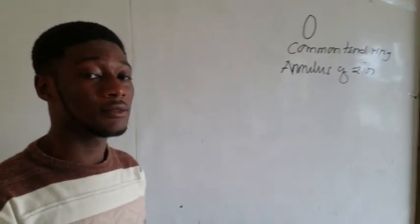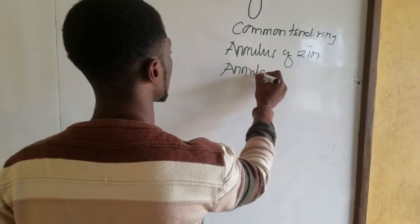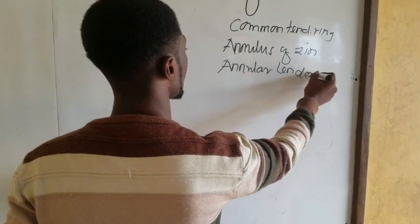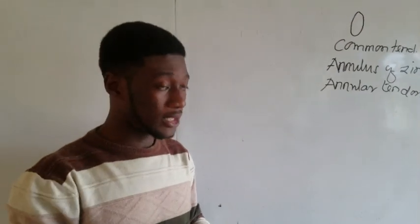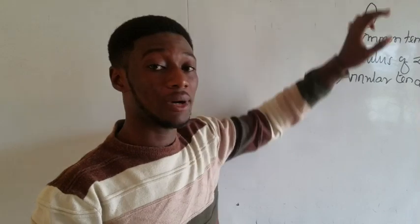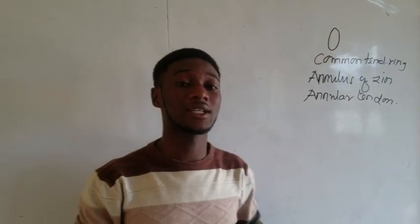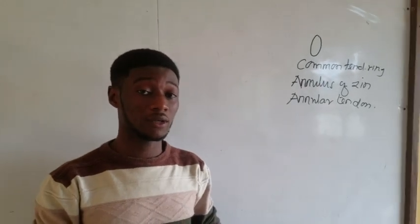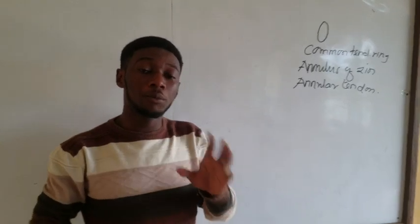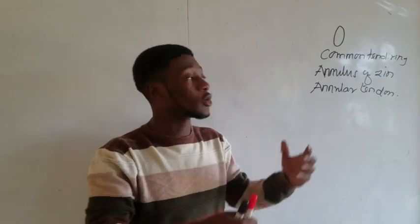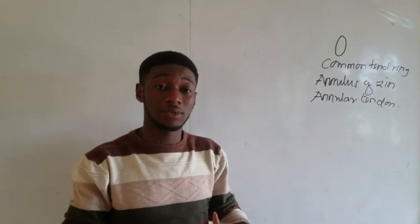Or better still, the annular tendon. They are all referring to one particular thing. The extraocular muscles originate from this common Tilaux ring, and they are inserted into the anterior aspect of the equator. The equator divides the globe into the posterior and anterior portions. The rectus muscles all come from the common Tilaux ring and get inserted at the anterior aspect of the equator.